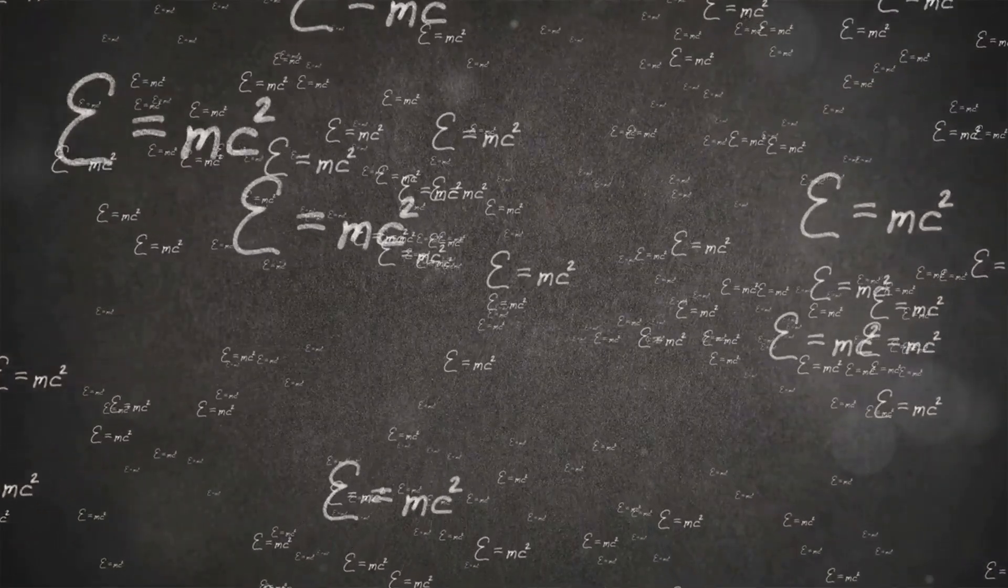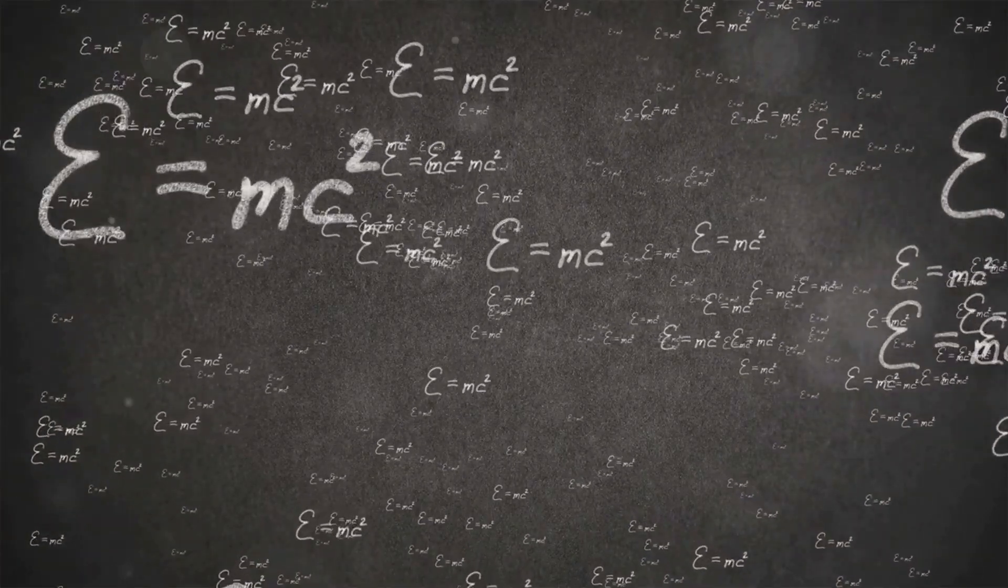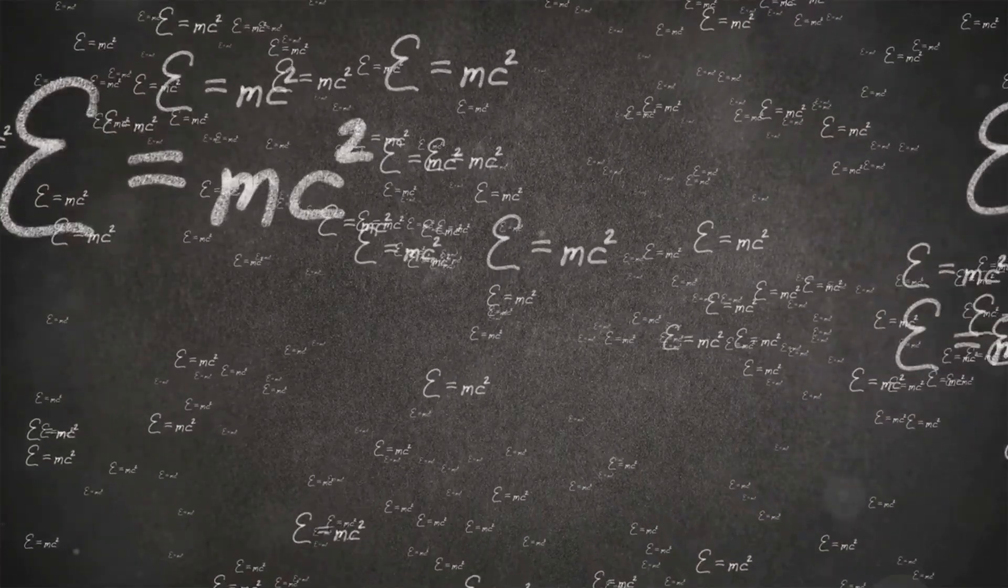Albert Einstein first predicted the existence of gravitational waves in 1916, as part of his general theory of relativity.